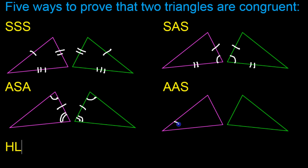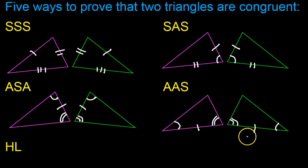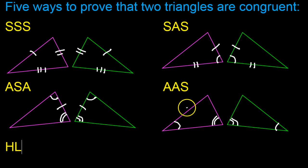Say if we have this angle congruent to this angle, and this angle congruent to this angle. Now if I were doing angle, side, angle, I would want to know that these sides are congruent — that would be angle, side, angle. But for angle, angle, side, you want the non-included side. So I might say this side is congruent to that side. So I have two angles and a side that is not in between them — that's angle, angle, side.